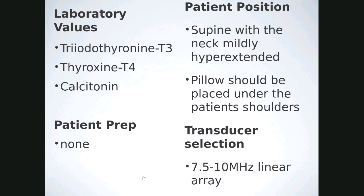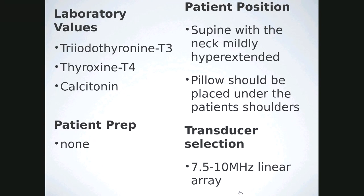You are essentially playing doctor, and you need to know the indications — why we're doing this and what we're looking for. That's why the registry is so important. Patient position is supine with the neck mildly hyperextended; place a pillow under the patient's shoulders but not under their head to provide a nice flat surface for scanning. Transducer selection: higher-frequency linear transducer — start with the 10 MHz and drop down if you don't get enough penetration. You want to be able to see down to the longus colli muscle.